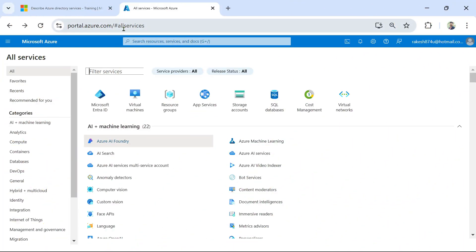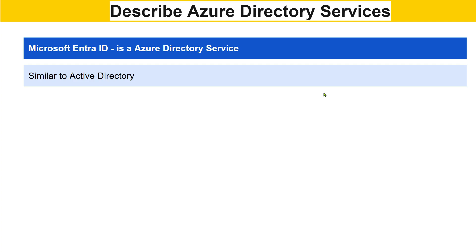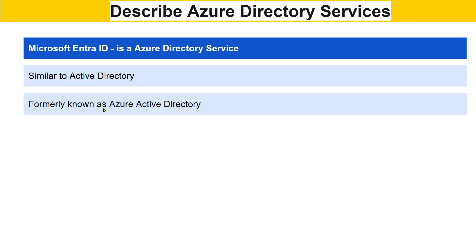I have logged into portal.azure.com. Once you log in and hit on All Services, you'll be able to see something called Microsoft Entra ID. It is similar to Active Directory — you might have heard about or worked on Active Directory. This is exactly similar to that, formerly known as Azure Active Directory, but now it is on the cloud.